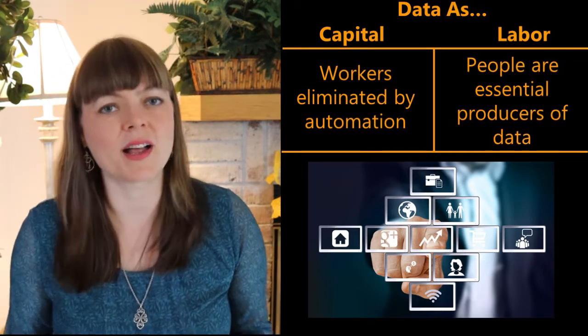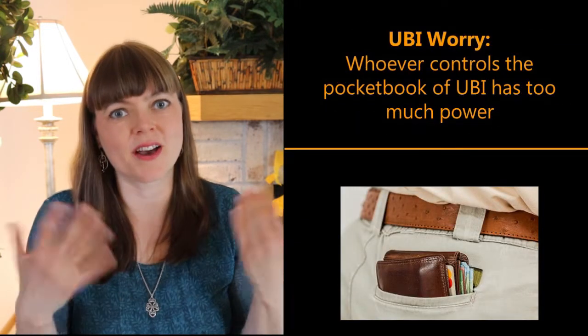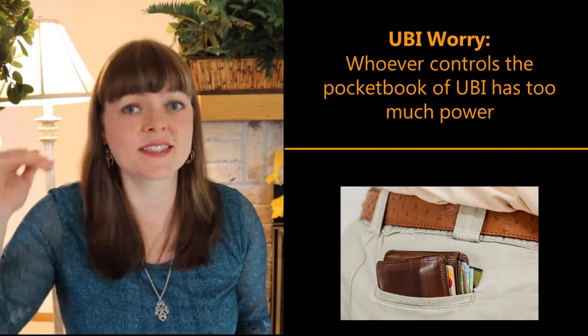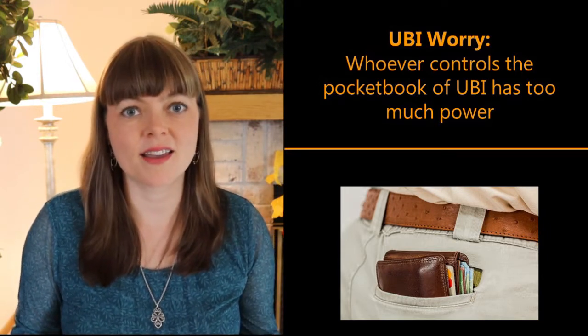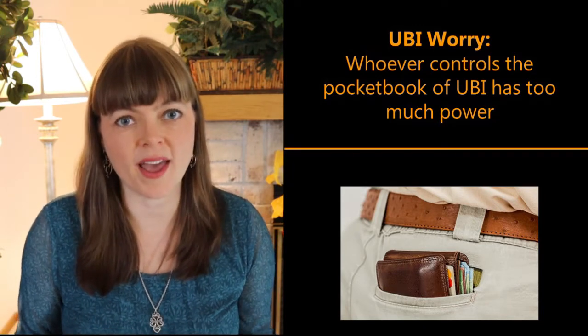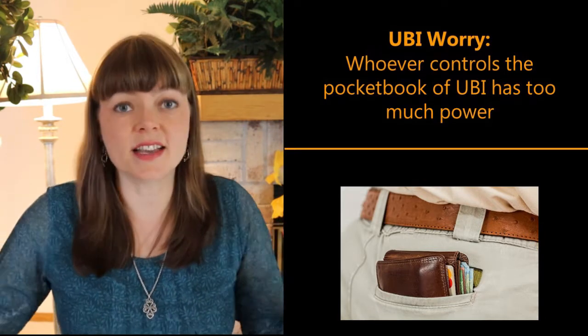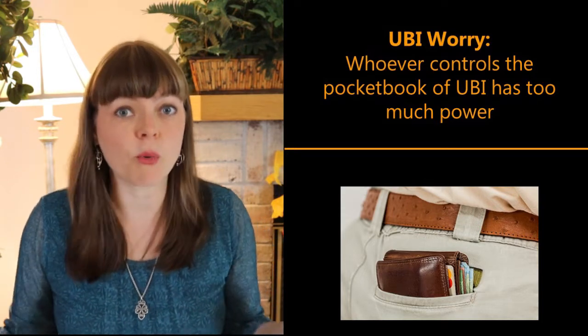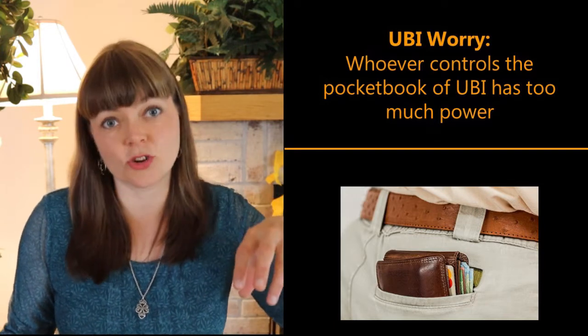And of course, another worry people have about UBI is that whoever controls the pocketbook of UBI, whoever gets to decide how much people get, they can have all of these stipulations. That control over the disbursement of UBI could potentially be abused or used in an authoritarian way. Whereas if people have control over the data they generate, which is necessary for artificial intelligence, then they have power to negotiate against that centralized distributor of UBI.